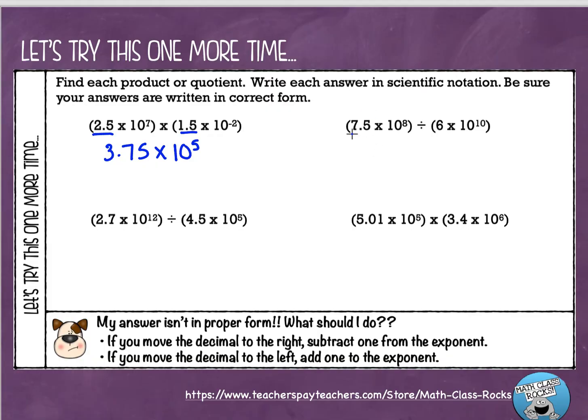Okay, let's go across and do the next one. This time, we're going to divide our coefficients. I have 7.5 and I'm going to divide that by 6. That's going to give me 1.25 times 10. And this time, we're going to subtract our exponents. Make sure you're subtracting from left to right. All right, 8 minus 10 is negative 2.